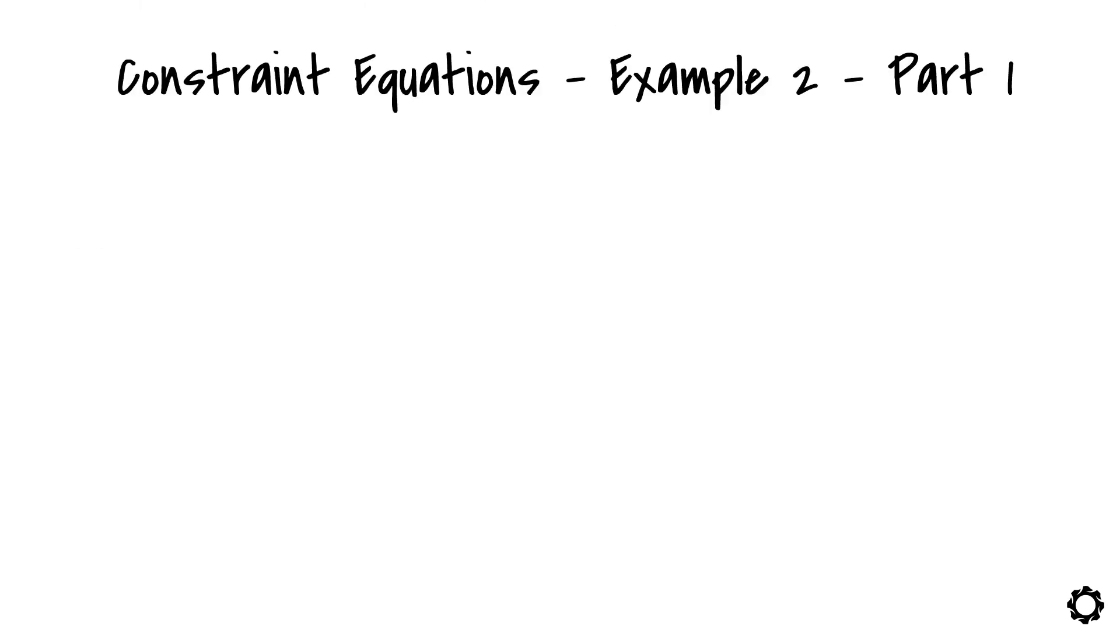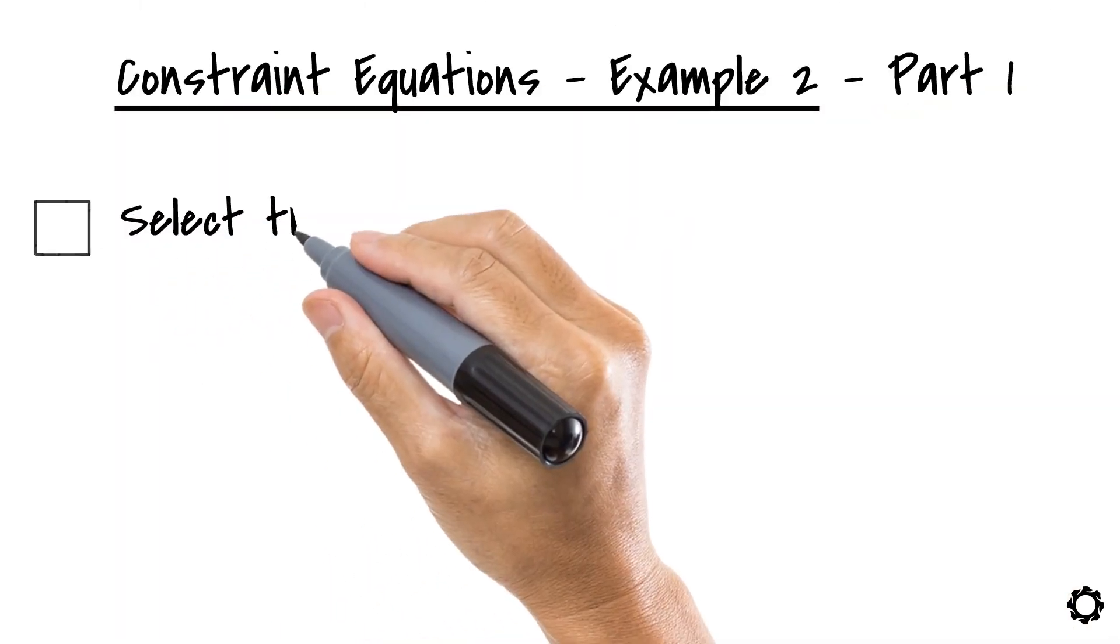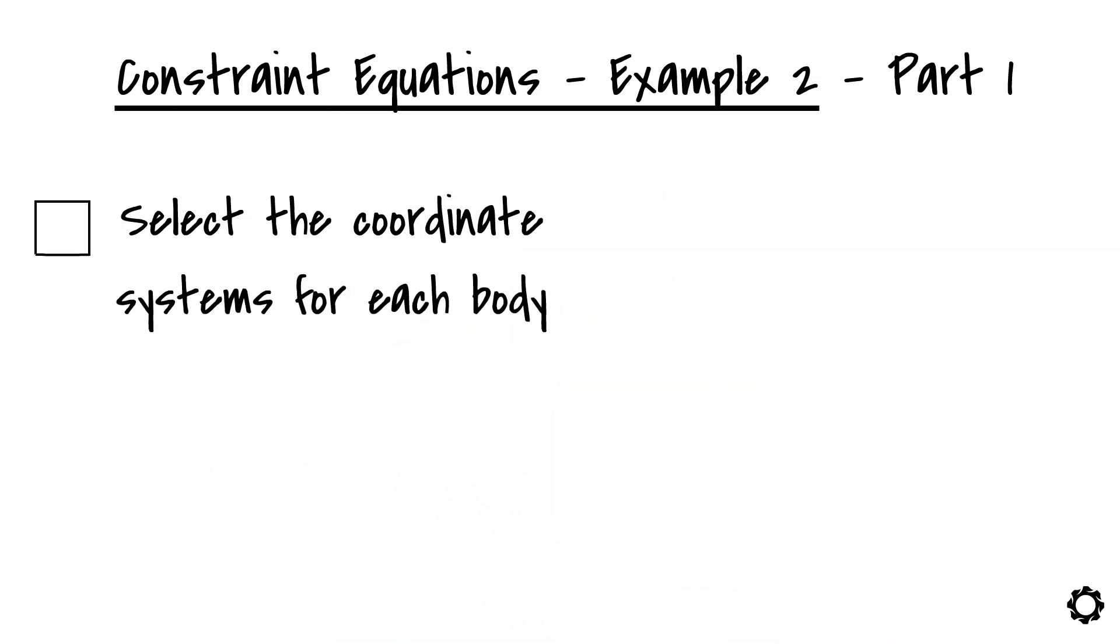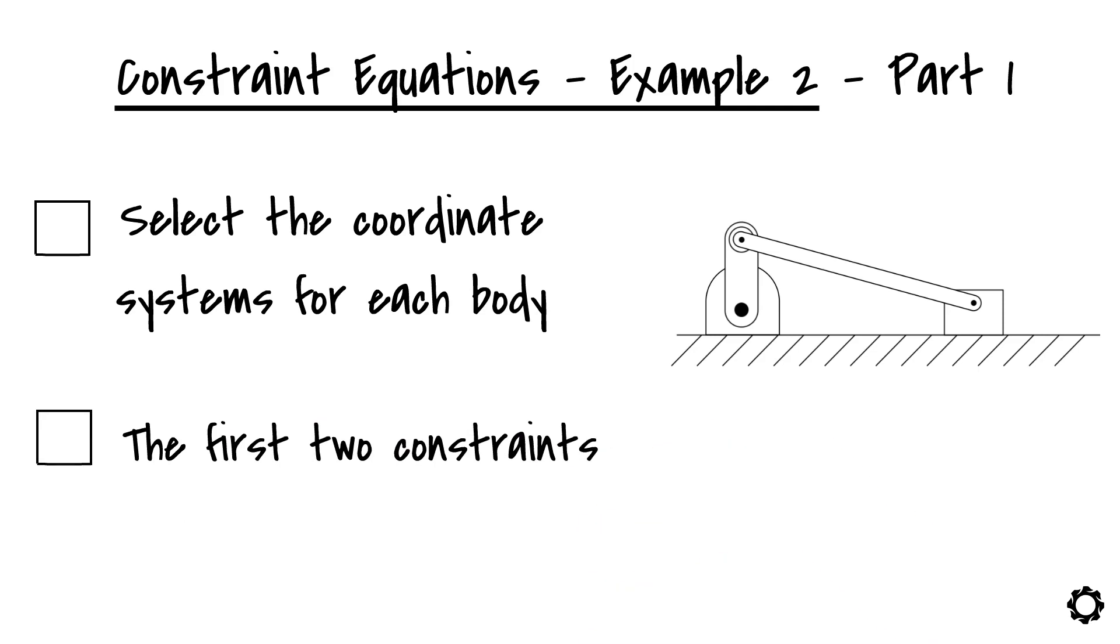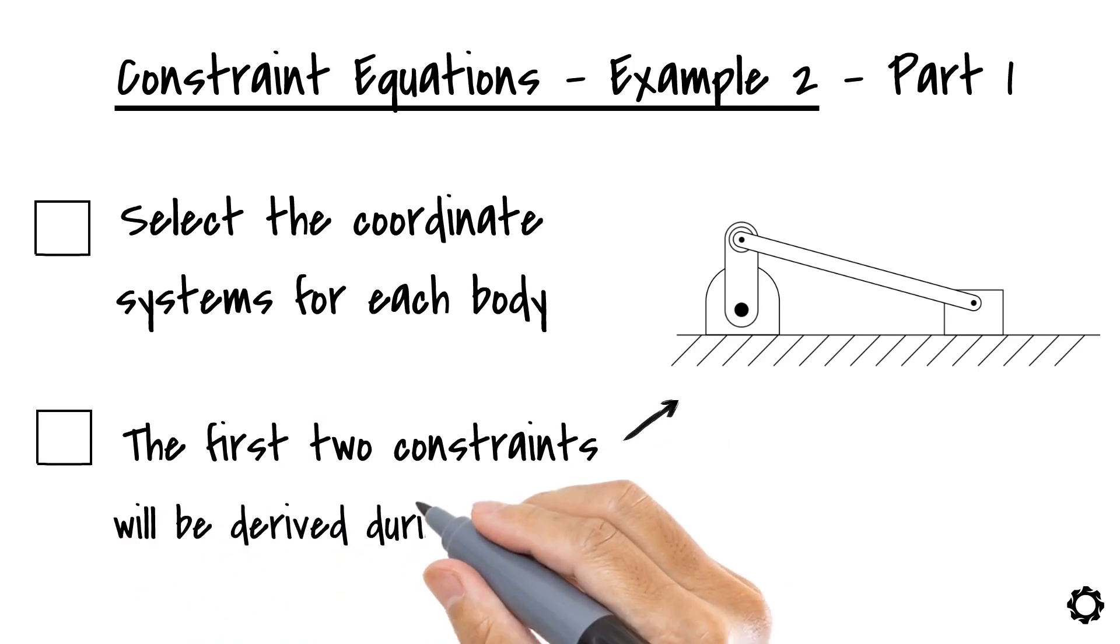In this first part of this example topic, we are going to select the coordinate systems for each body in the crankshaft mechanism. Also, the first two constraints of the system will be derived during this video.